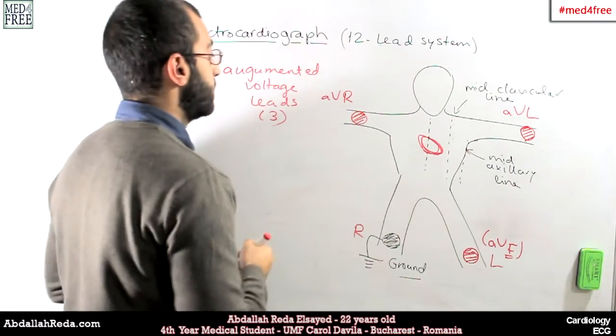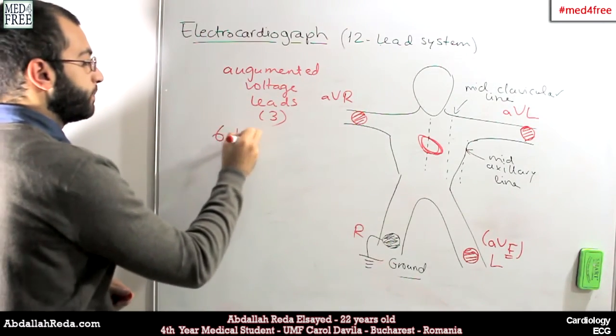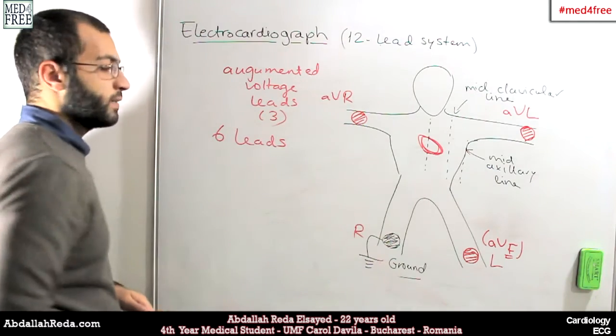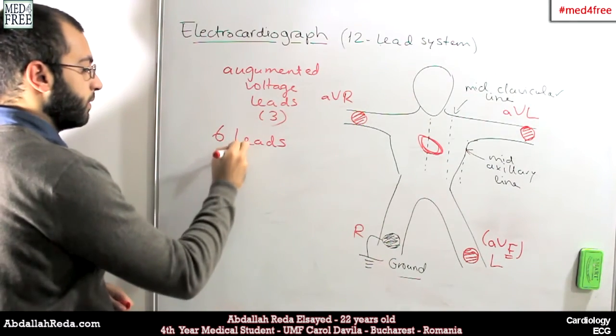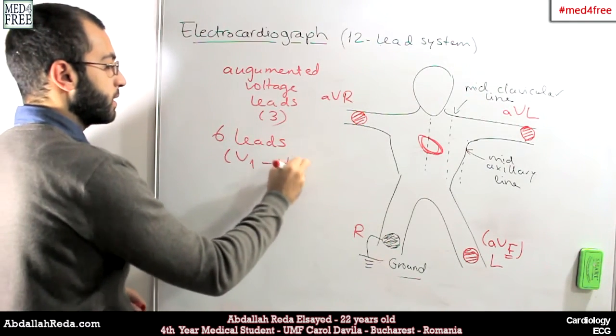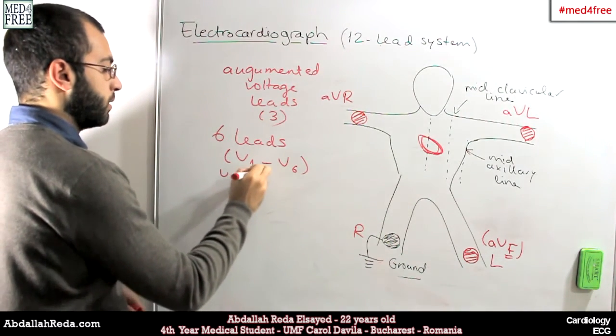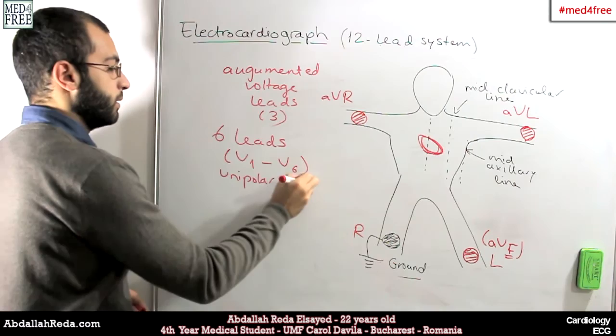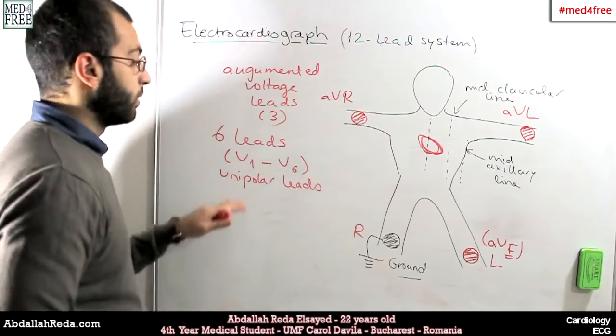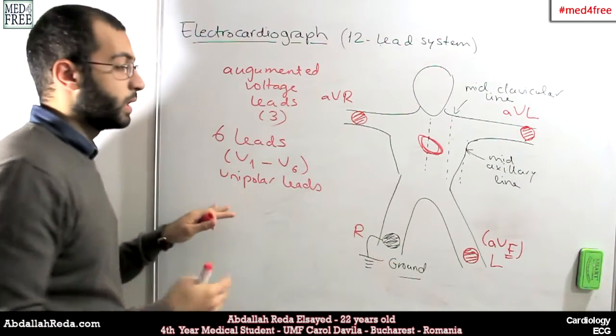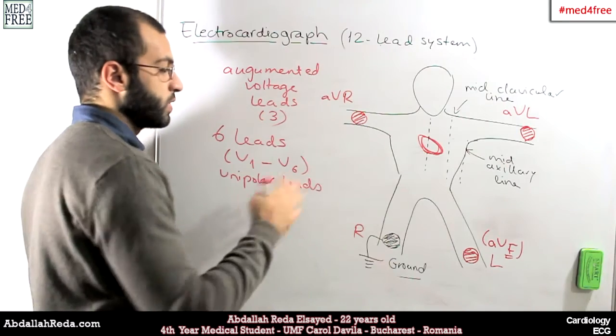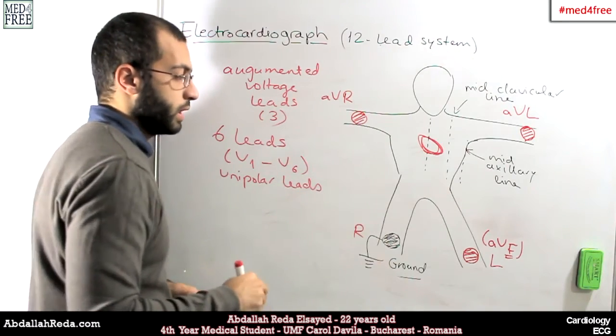So we have six leads numbered from V1 to V6, and those ones are called unipolar leads. So those ones have just one pole, and we will see how that works in a moment.